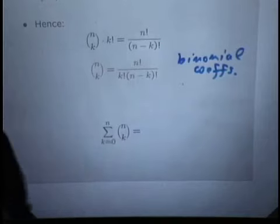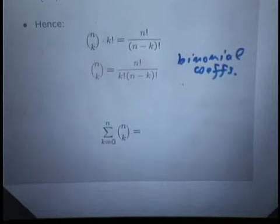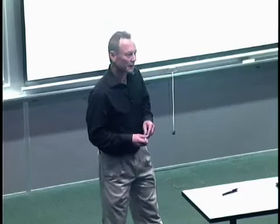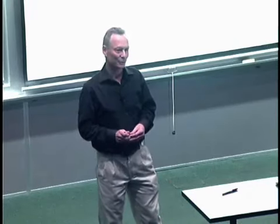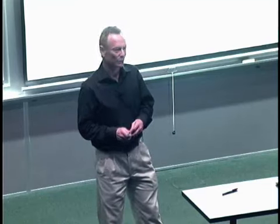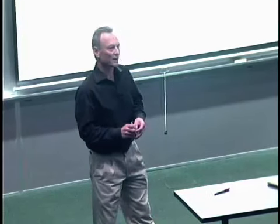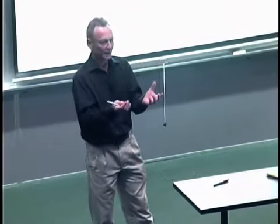The first term in this sum counts how many zero element subsets we have. The next term in this sum counts how many one element subsets we have. The next term counts how many two element subsets we have. So in the end, what have we counted?